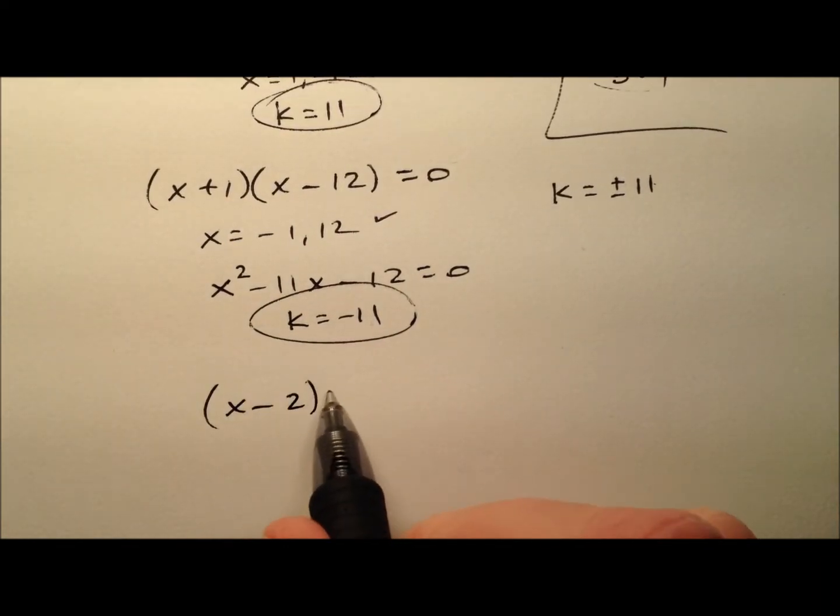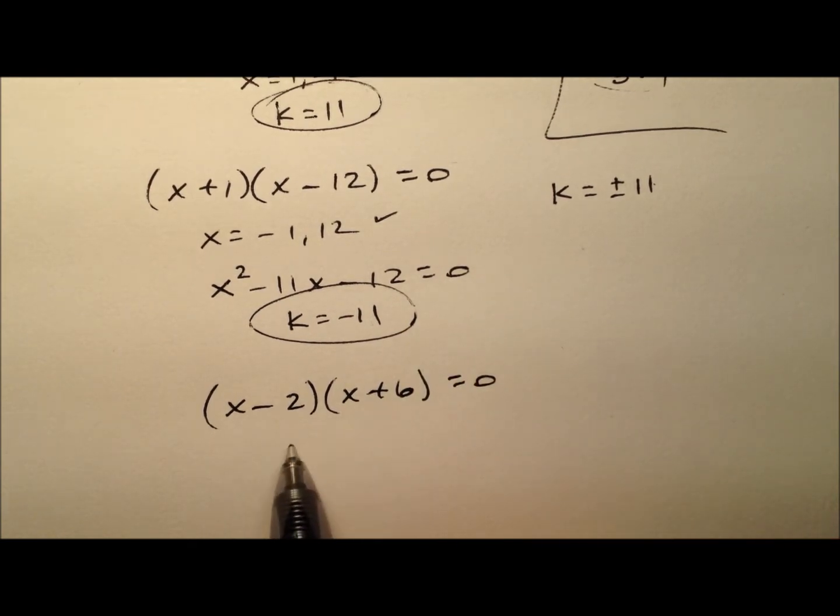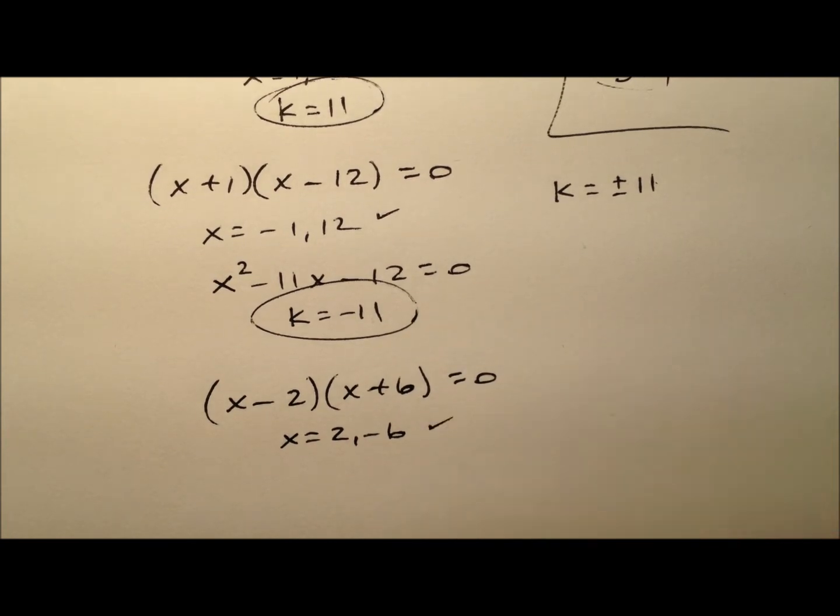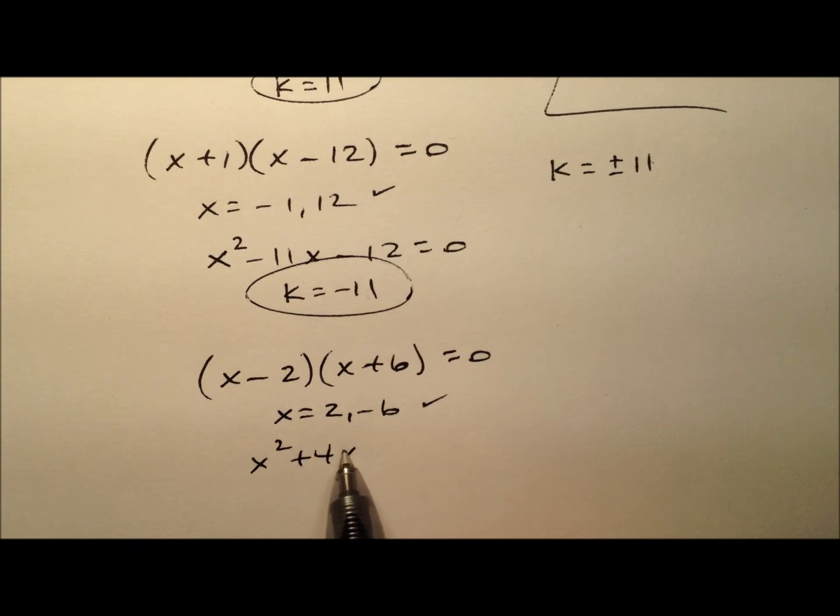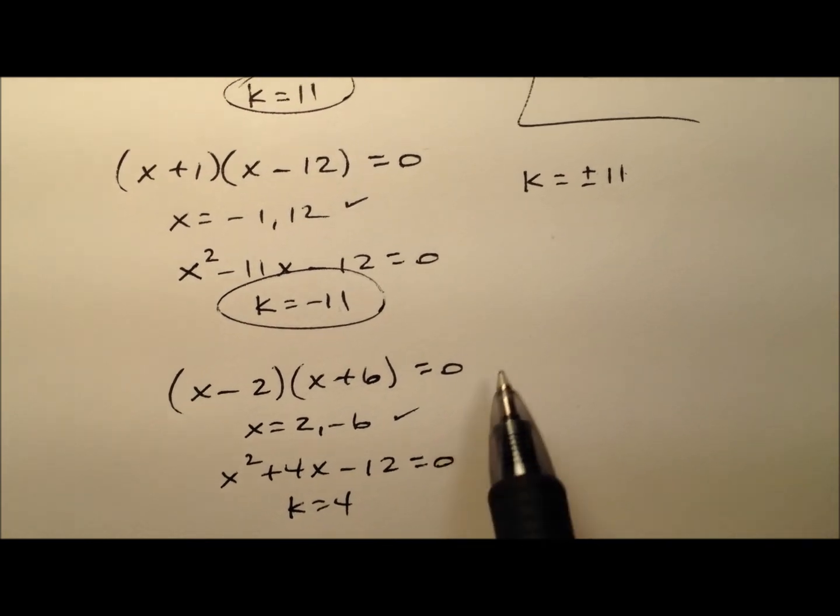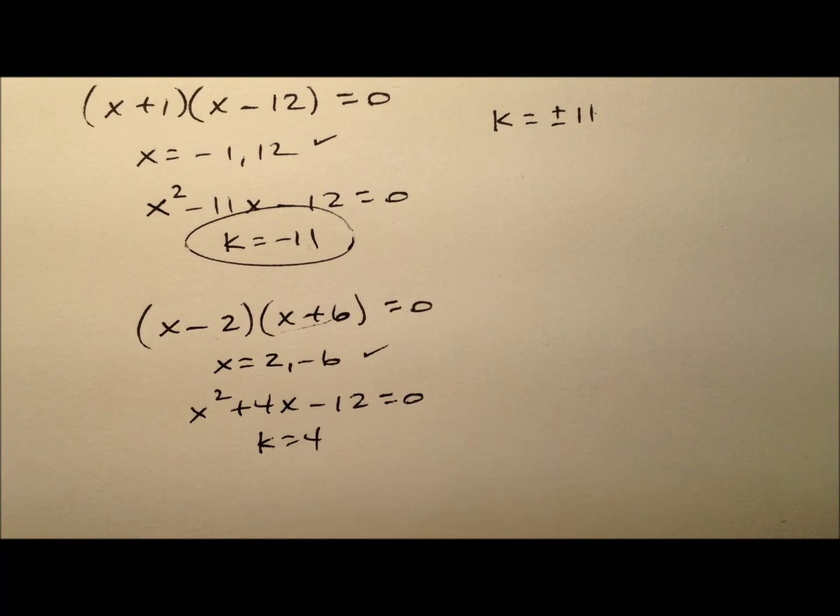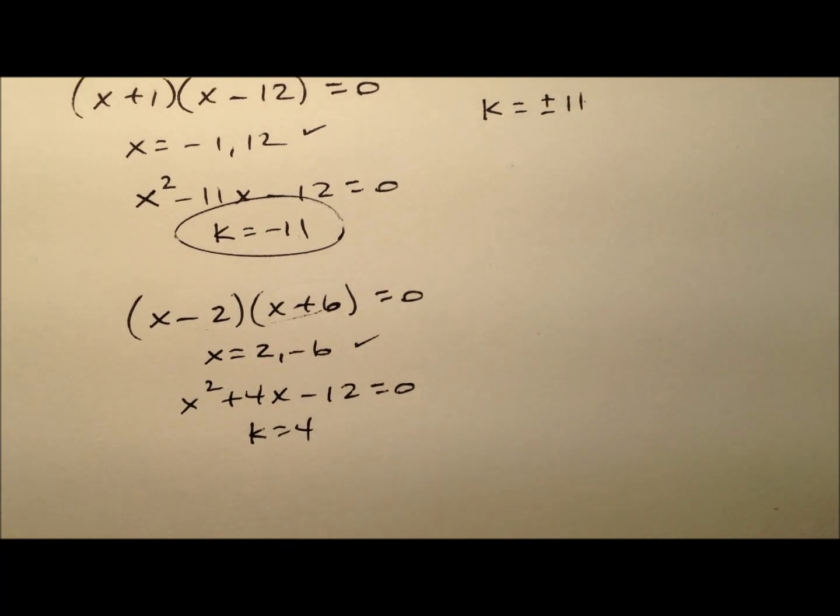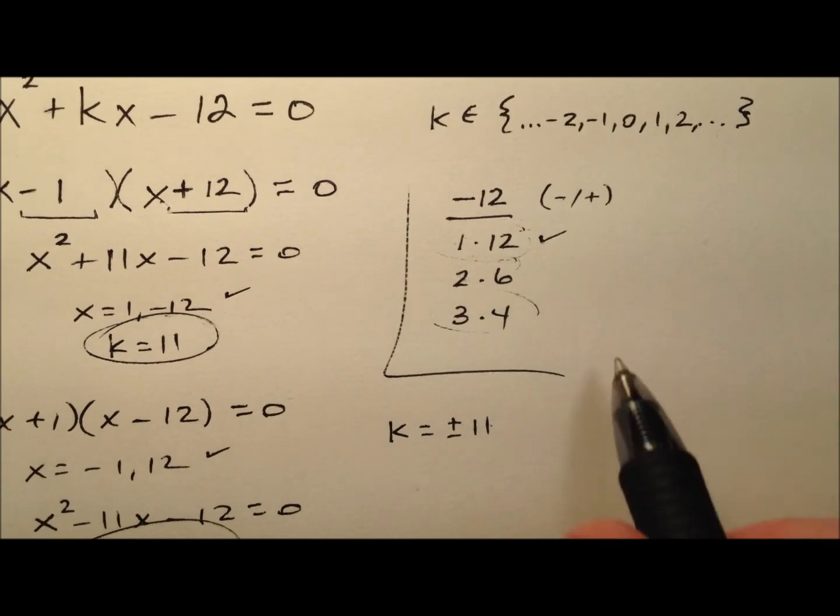(x - 2)(x + 6) gives solutions 2 and -6, which are integers. Multiplying out: x² + 4x - 12 = 0, so k = 4. Once again, 4 is the difference. If we switch the signs, we get k = -4 as well.